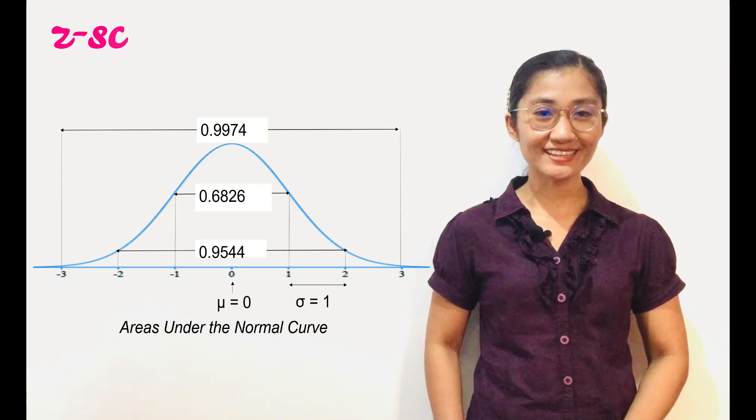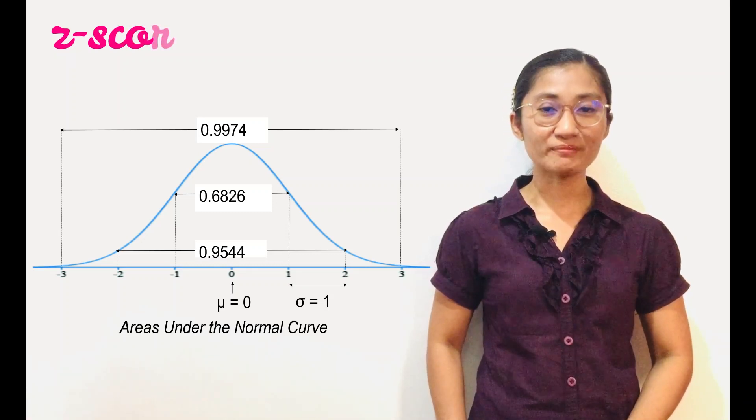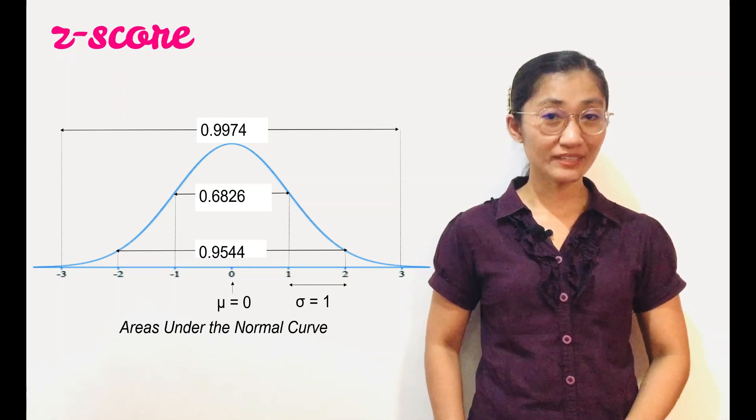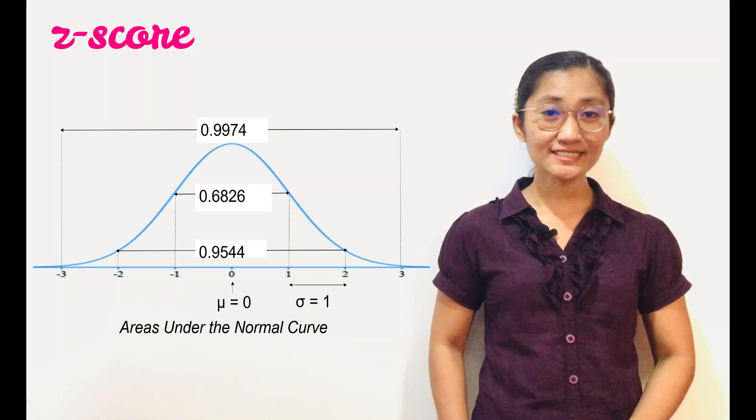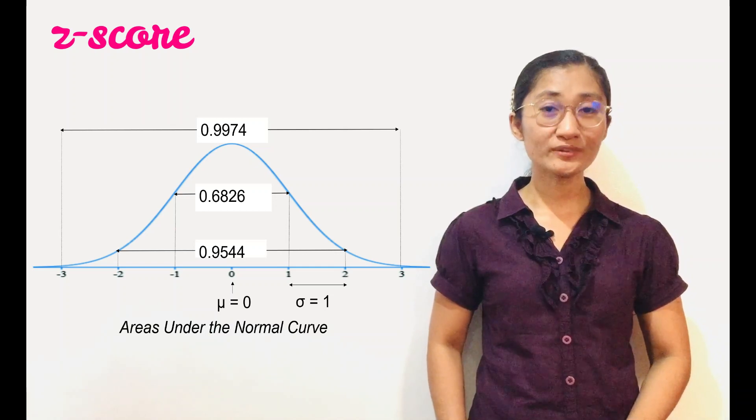It represents the distance between a given measurement x and the mean expressed in standard deviations. It locates x within a sample or within a population.